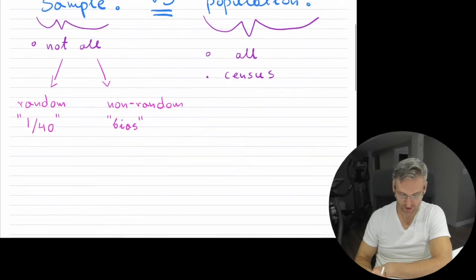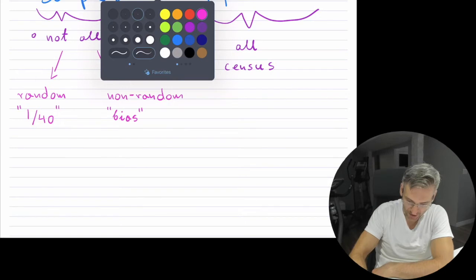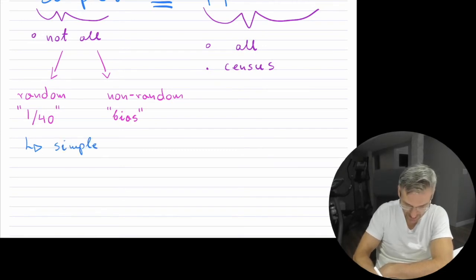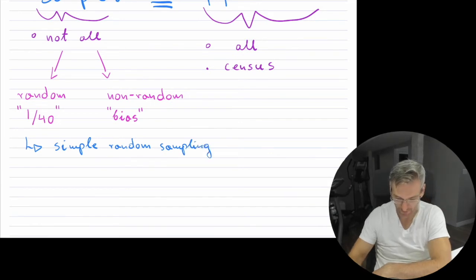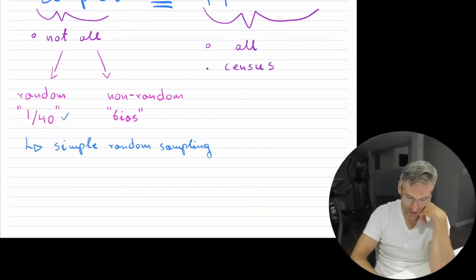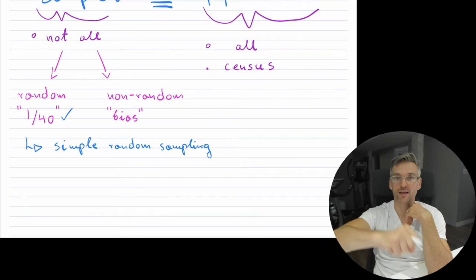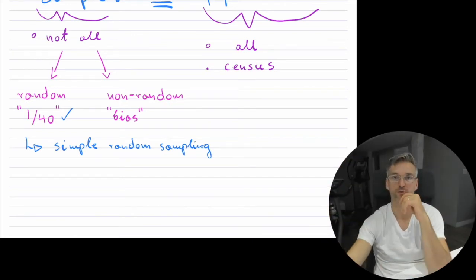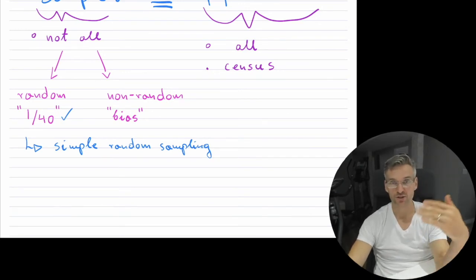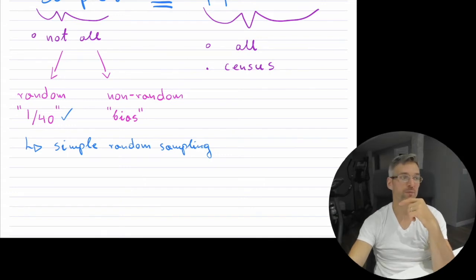With these random choices, very often in sampling we have something called simple random sampling. This occurs when we take a particular set of students — let's say 10 out of the 40 students that passed the class — at a uniform chance. Maybe I'll draw the names out of a hat so it's all randomized, or maybe I generate a computer that just picks the numbers at random until I get my 10 students. That would be simple random sampling, where I'm not doing anything special — they're all chosen at random from the 40.